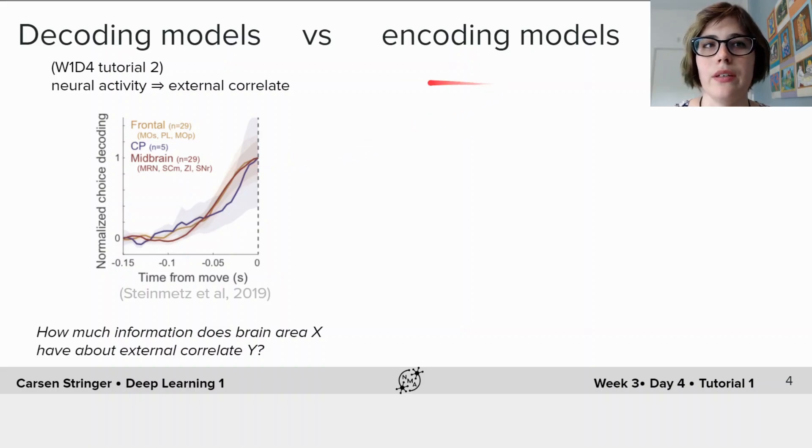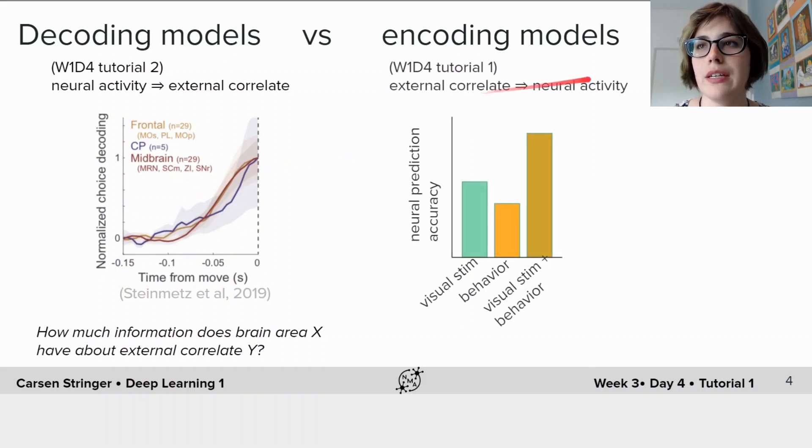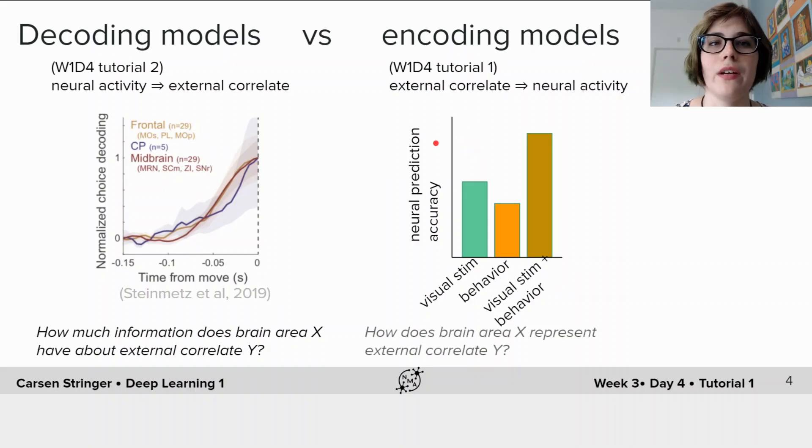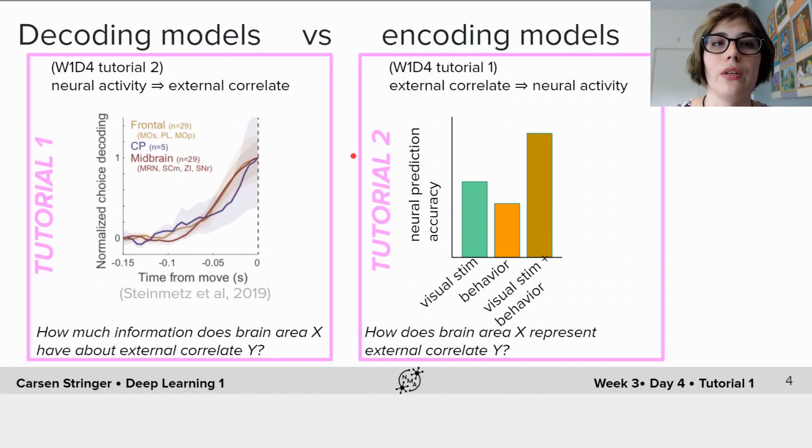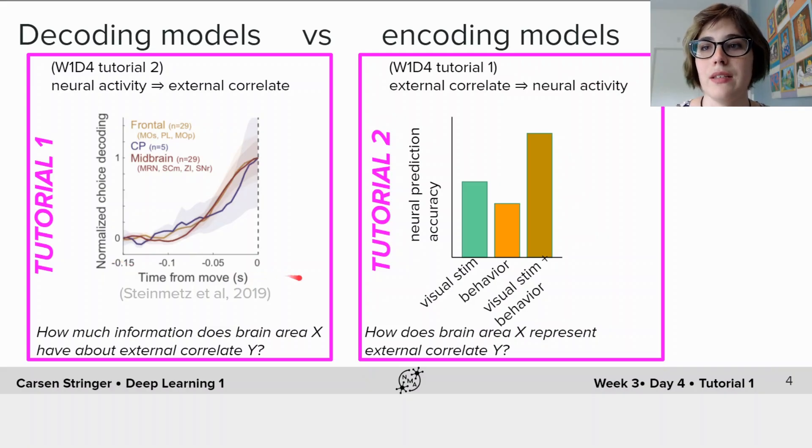Encoding models, on the other hand, are used to predict neural activity from external correlates. You built a model such as this on week one, day four, to predict retinal neural activity from image pixels. This type of model can help you understand how a brain area represents different external correlates, such as visual stimuli. In both of these cases, you use the linear models. Today we will use deep neural networks to build decoding and encoding models due to their ability to fit nonlinear functions and their ability to be fit easily.